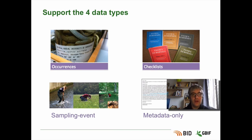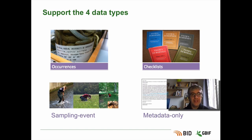A first and very important feature of this tool is that it allows publishing the four classes of datasets that were discussed in the previous screencasts: occurrences, taxonomic checklists, sampling events datasets, and metadata-only datasets.